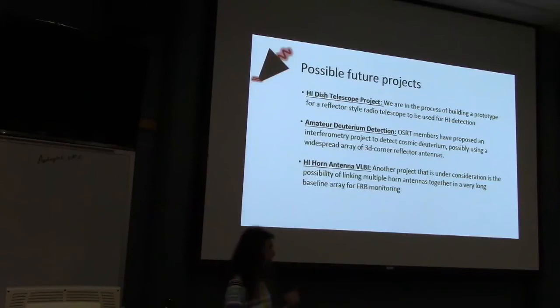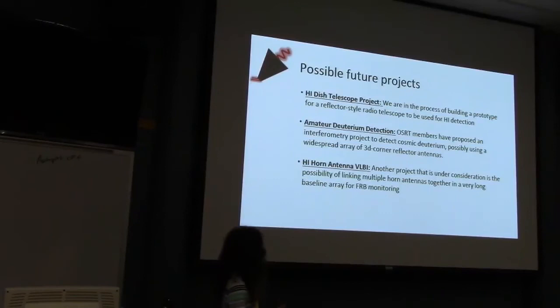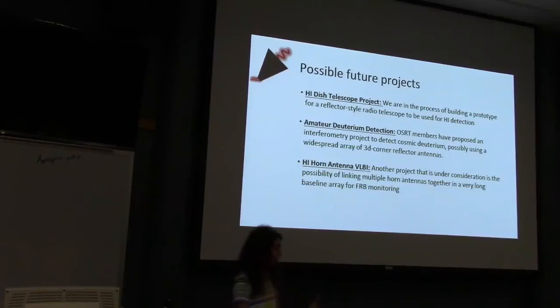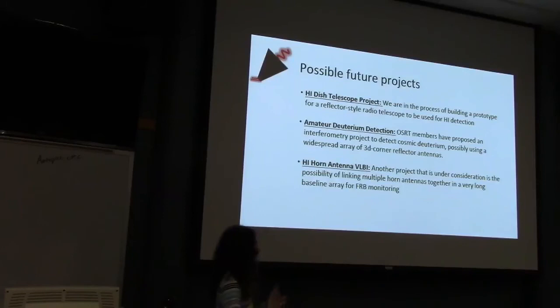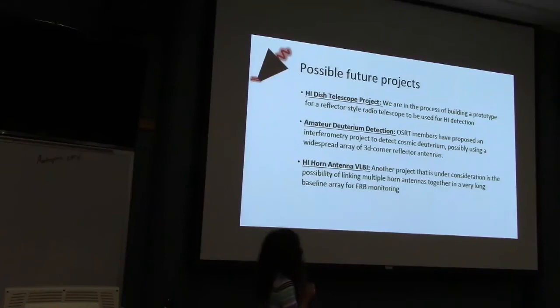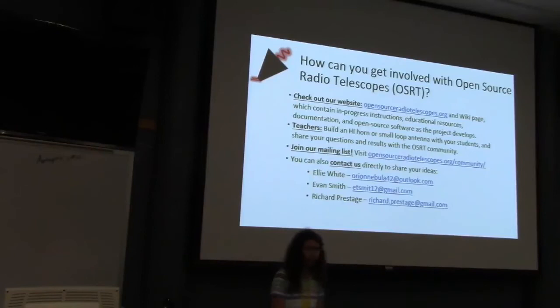Another project that has been discussed is VLBI of horn antennas — a system of connected horn antennas that we could use to do some research on fast radio bursts. One thing we've determined is that we'd need a really large number of horns, and probably in addition a full-sized dish to also monitor those observations. All these ideas are in the development phase, and we're excited to see where they go.